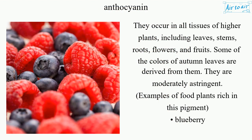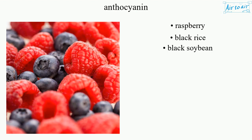They are moderately astringent. Examples of food plants rich in this pigment include blueberry, raspberry, black rice, and black soybean.